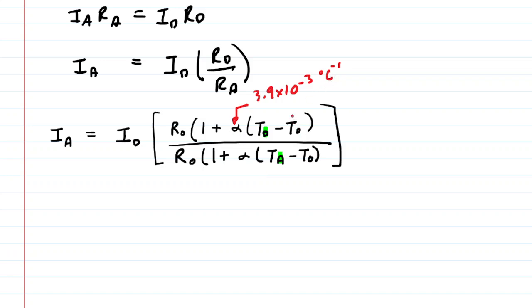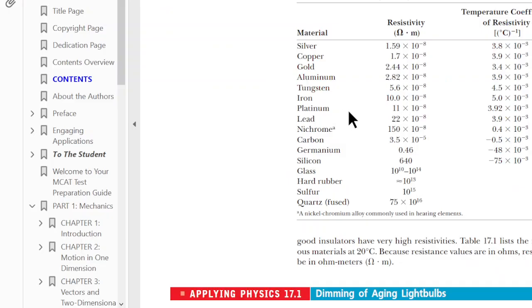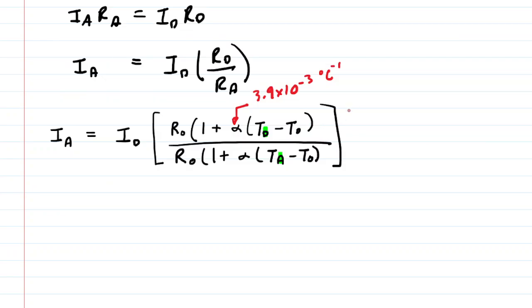We also have this T sub 0 in both terms. That is a reference temperature. If you go back to that table, all of these temperature coefficients have been collected at a temperature of 20 degrees Celsius. So that's going to be the value of your T sub 0 for both the numerator and the denominator. And then we're going to plug in the temperature at Death Valley and then the temperature at Antarctica.